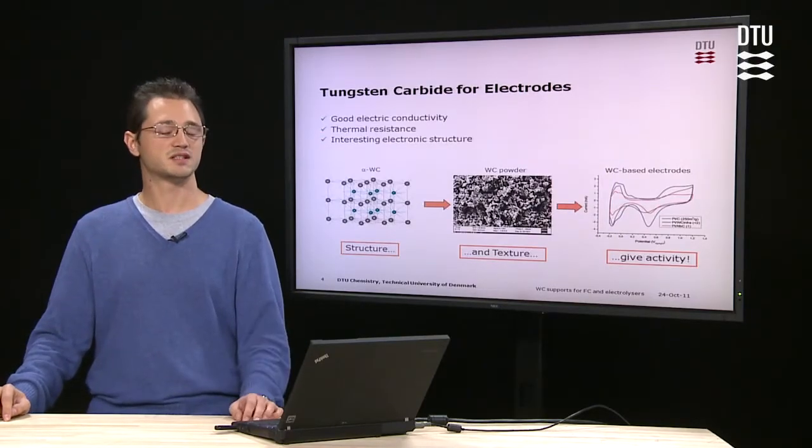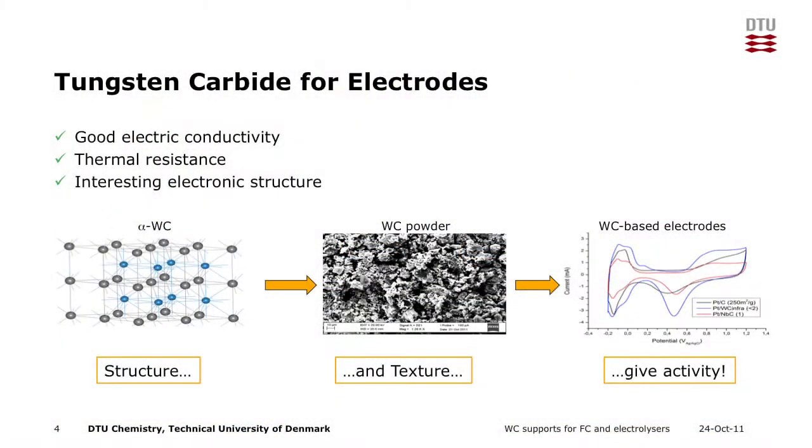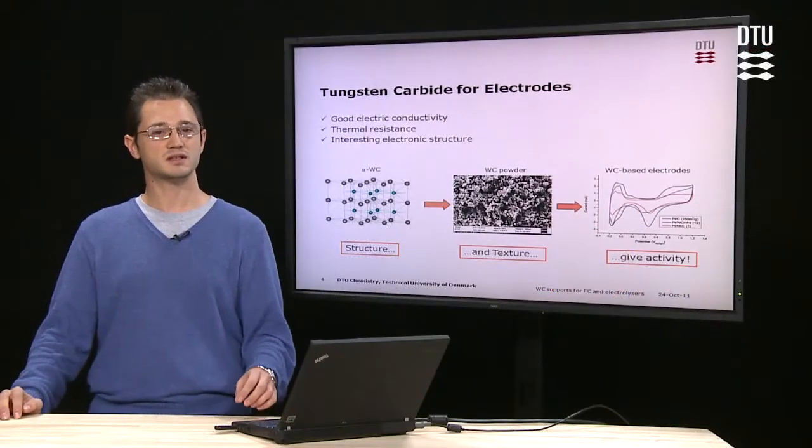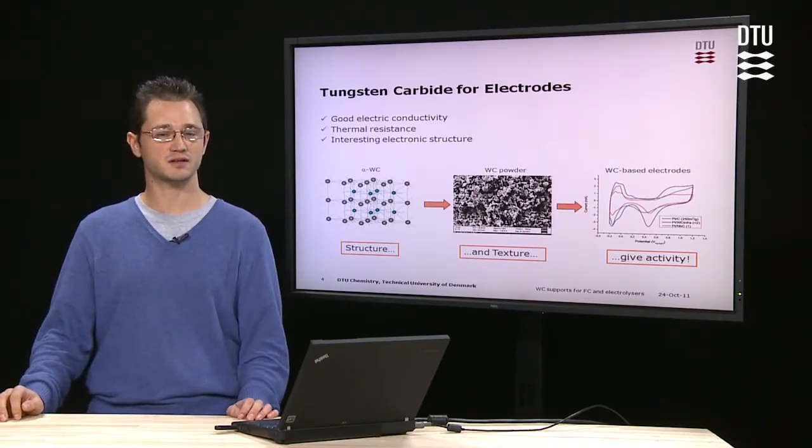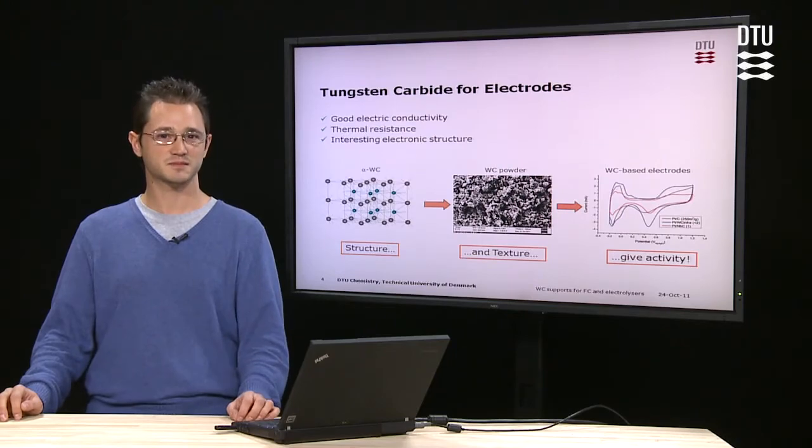For instance, a material I'm looking at in my project is tungsten carbide. This is an interesting material because it has some good properties that can make it suitable for these technologies. And what I'm working on is the development and testing of tungsten carbide-based materials for fuel cells and electrolysis. Thank you very much.